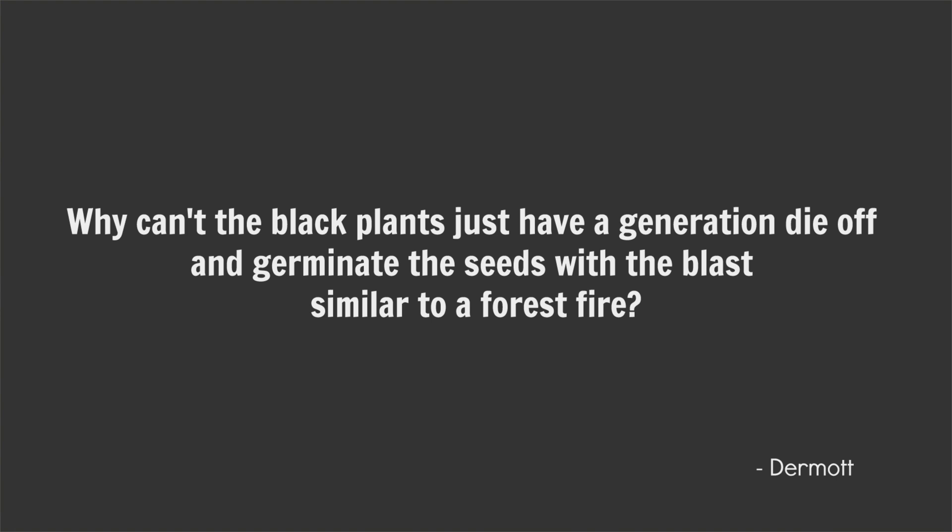Why can't the black plants just have a generation die off and germinate the seeds with the blast, similar to a forest fire? This question is in reference to the scenario I proposed at the end of the last video, where I say that planets around low-mass flare stars would likely feature black plants, and those plants would likely have early warning systems so that they can detect and then hide from a massive solar flare. The idea of the solar flare acting kind of like a forest fire is actually a really cool idea, but just like the previous two questions, I wonder if there'd be a problem of rate. How often do flare stars flare? If they flare at a generational sort of rate, then sure, it works. If they flare every five minutes or whatever, then it's not going to work. So that's something you could totally look into.